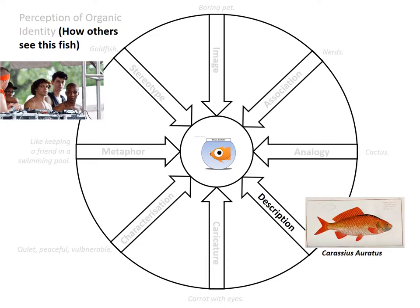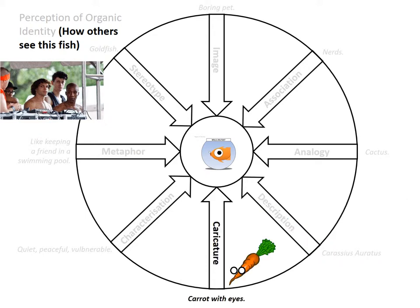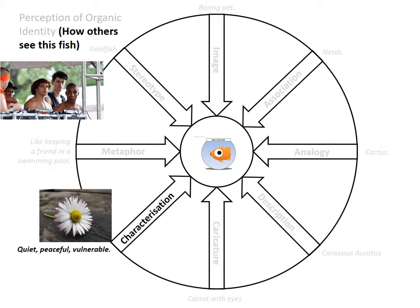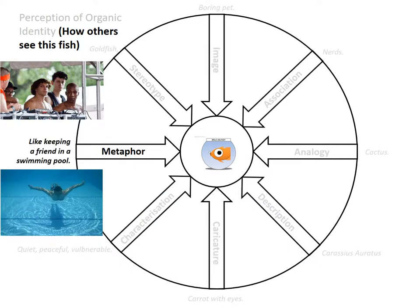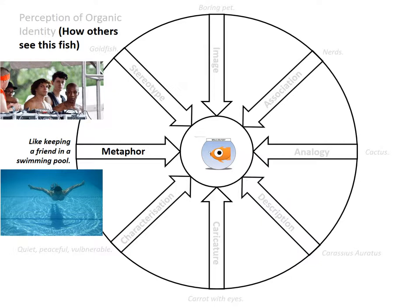And it's about as exciting as a cactus. Some might tell you it's actually called Caracius auratus. Some might say it looks like a carrot with eyes. Some might characterize the fish as being a quiet, peaceful, vulnerable creature. And some might say having one is like keeping a friend in a swimming pool. And the stereotype might be simply that of a goldfish.